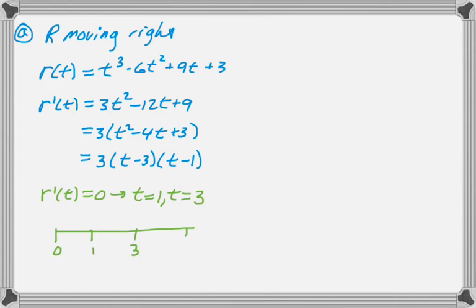We know that R prime is 0 at 1 and 3. So my number line is going to have 0, 1, 3, and 6 on it. And it's a quadratic that opens up. So I know that it's going to go positive to negative to positive.